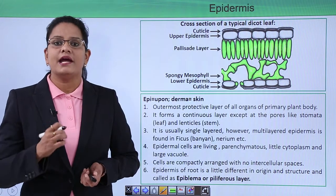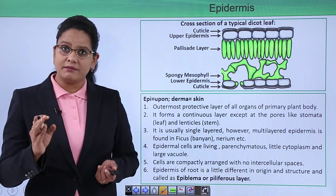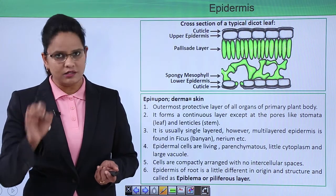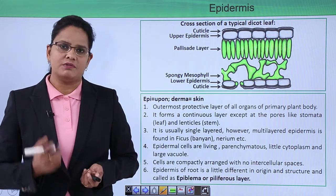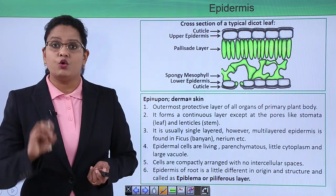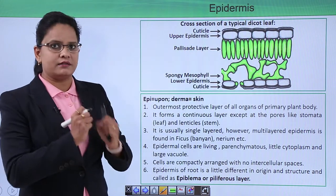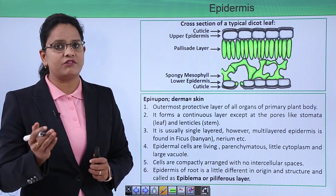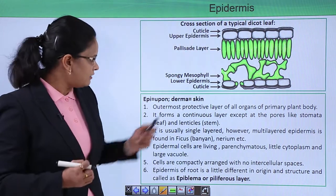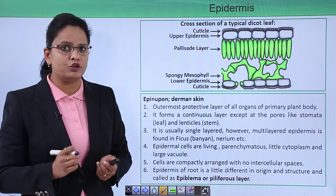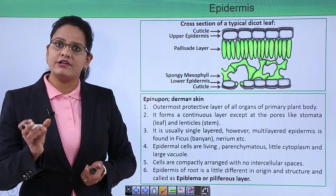The epidermis is usually a single layer of compactly arranged cells, but it can also be multilayered in plants like Ficus and others. The cells are living and parenchymatous, with a little cytoplasm, a large vacuole, and a nucleus. The epidermis is a continuous layer with no intercellular spaces — as clearly seen in diagrams, the epidermal cells are closely packed. In the lower epidermis, cells are tightly arranged but with a few minute pores, which are the stomata.